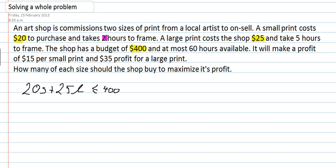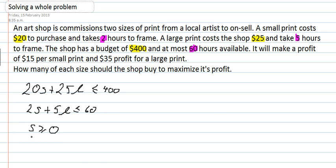The next constraint is: it takes 2 hours to frame a small, it takes 5 hours to frame a large, and there are 60 hours in total — so that's constraint number 2: 2 hours for a small plus 5 hours for a large, less than or equal to 60. It's also implied that small ≥ 0 and large ≥ 0, because I can't have a negative amount of prints.